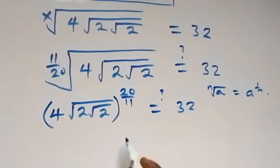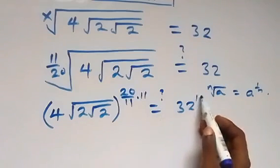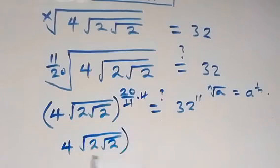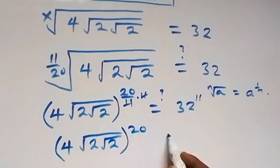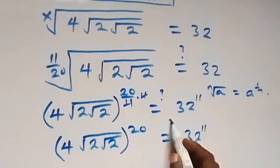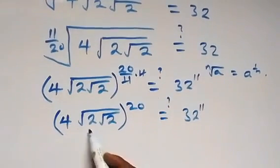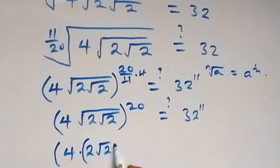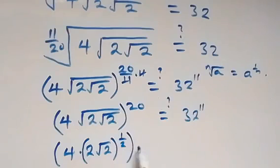From here, let's multiply both powers by 11 — the 11 cancels — and we have (4 times root 2 times root 2) raised to power 20, equals 32 raised to power 11. We can write this as: (4 times 2) raised to power something, times (root 2 raised to power half) — since the square root equals a power of one-half. So we can write this as (4 times 2) and 3 times 2 raised to power half.